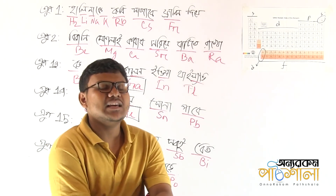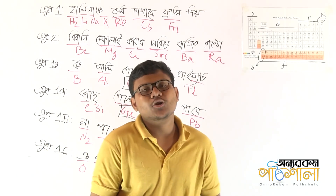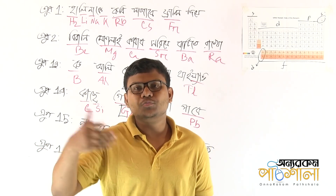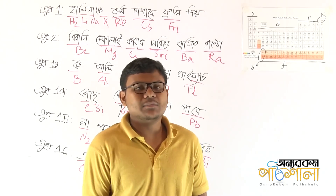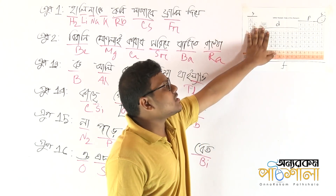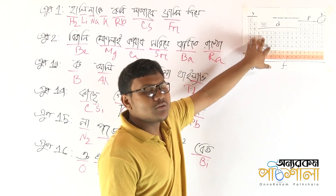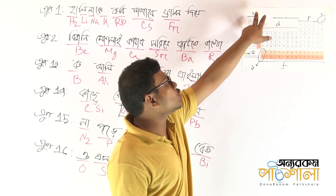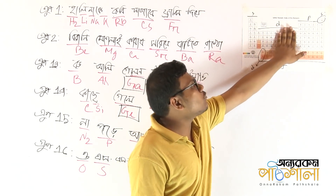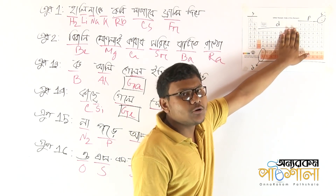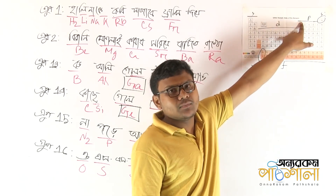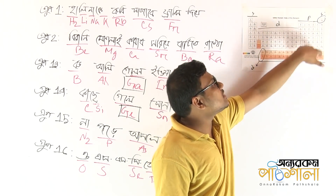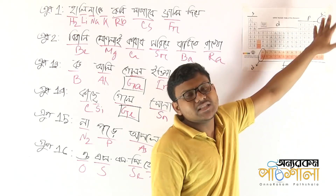Let's look at the periodic table. We have groups — Group 1, Group 2, and then continuing to Group 13, 14, 15, 16, 17, 18.